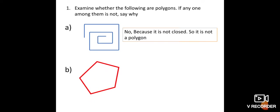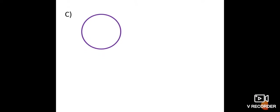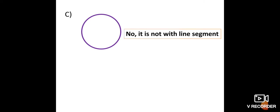Figure B: Is it closed? Yes. Is it made of line segments? Yes. Therefore, this is a polygon. Figure C is a circle. Is this a polygon? No. Why? There are no line segments — it is not formed with line segments, so it is not a polygon.